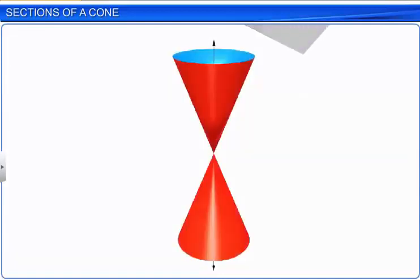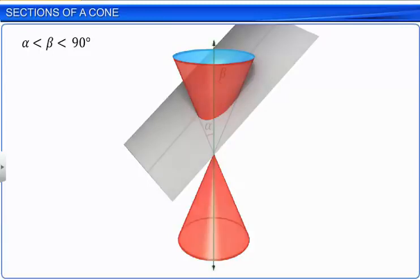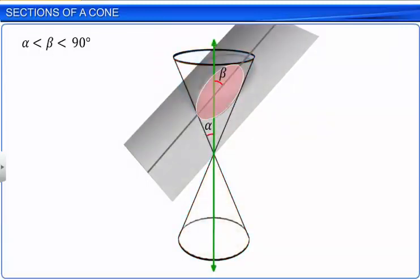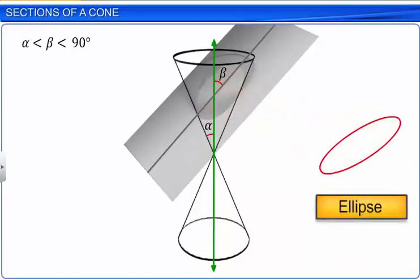If the plane intersects one nappe of the cone such that angle beta is greater than angle alpha but less than 90 degrees, the resulting conic section is an ellipse.